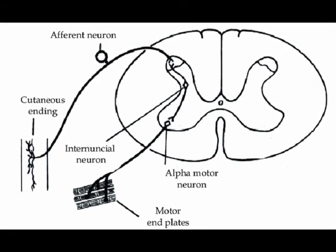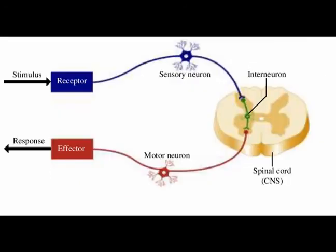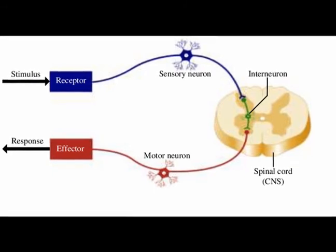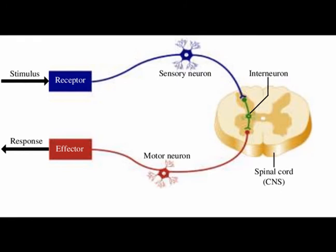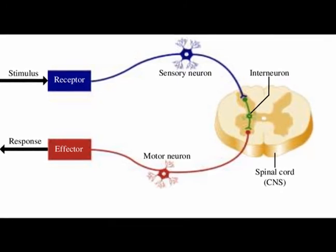When a myotatic reflex is initiated, another signal branches off the 1a afferent stretch neuron and activates an inhibitory interneuron to prevent the opposing muscle group from activating during the reflex.